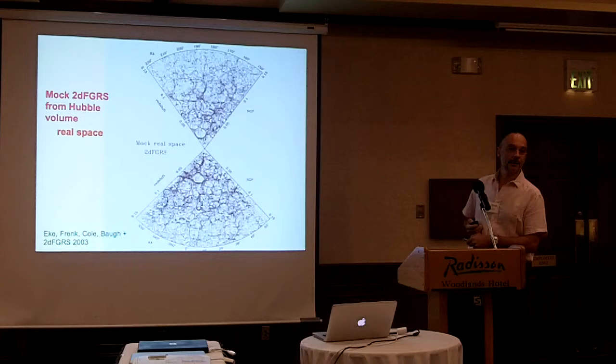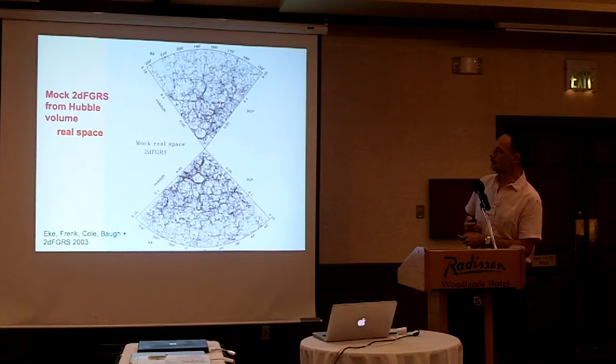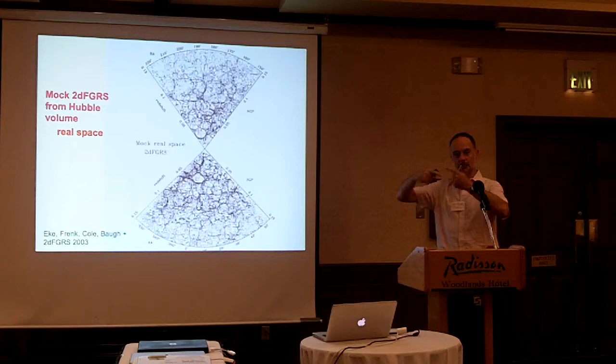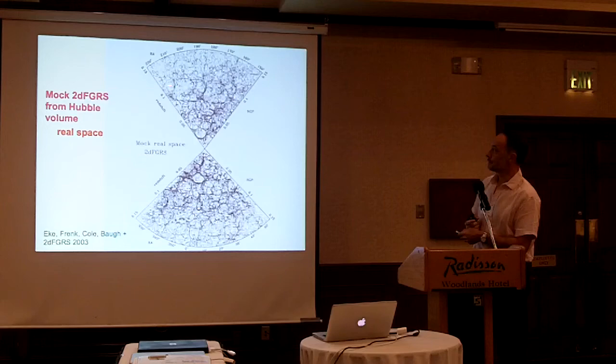First of all, these supercluster filament features will move in a kind of coherent way. And secondly, embedded within them — say there, that rich cluster of galaxies — that's a system where internally the galaxies are all orbiting around each other. So the line-of-sight component of velocity is random, and that will stretch it out in this finger of God.